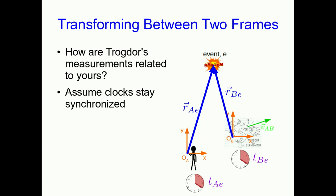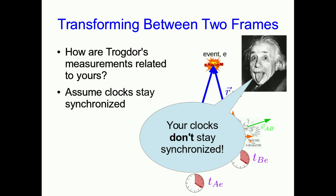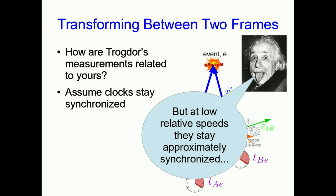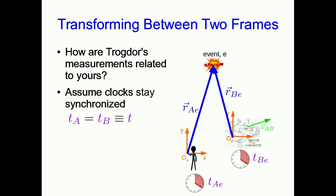The first thing we're going to do is assume that your clocks stay synchronized. That seems reasonable—if you have good clocks that once you've synchronized them they should stay synchronized—but experiment actually tells us that this is not a good assumption. This doesn't agree with experiment. However, as long as Trogdor isn't moving too fast relative to you, where too fast means close to the speed of light, then this is a good approximation and so we're going to use it. So that means any time you measure is going to be the same as the time that Trogdor measures, and so we can just drop our A and B subscripts and call it T. So the time of the event is just going to be T sub E.